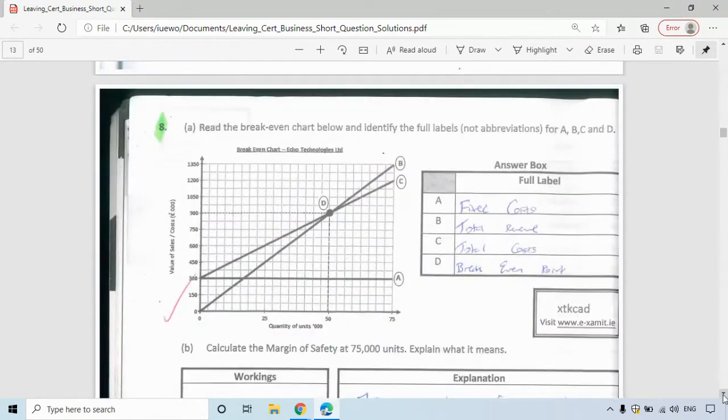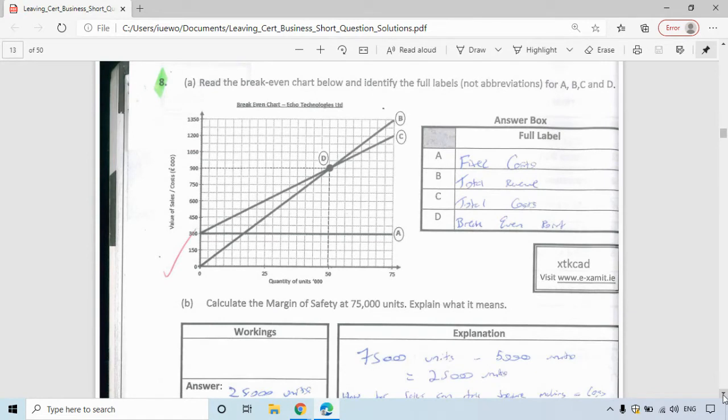For question eight, we have a break even chart. You've got to fill the letters in. So A is your fixed cost. That's the one that is the same the whole way across. That's your fixed cost line. B is your total revenue line. That will be the one that starts at zero and goes the whole way up. C is your total cost line, which you can see here. And D is your break even point where the two points meet. So there are your A, B, C and Ds.